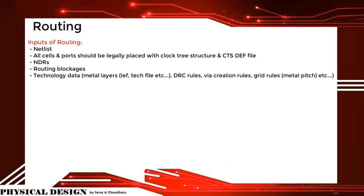The inputs of routing include: the netlist, where all cells and ports should be legally placed with the clock tree structure and CTS; NDRs; routing blockages; and technology data — that is, metal layer, left tag file, DRC rules, via creation rules, grid rules, metal pitch, etc.